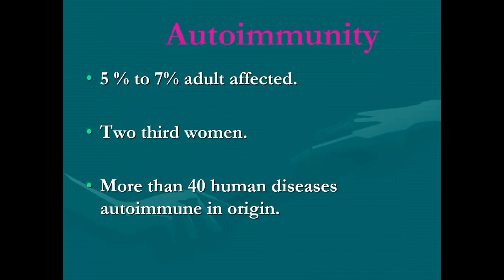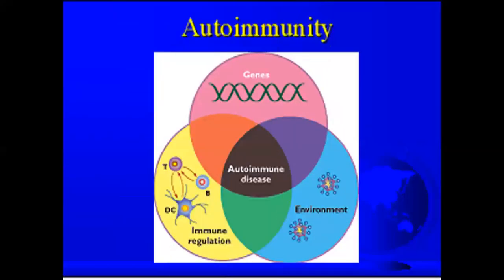Autoimmune affects around five to seven people in adults affected, and more than four million people have autoimmune diseases in common. Autoimmune can be due to genetic factors, environmental factors, and also immunoregulation issues. All three of these things can cause autoimmune.